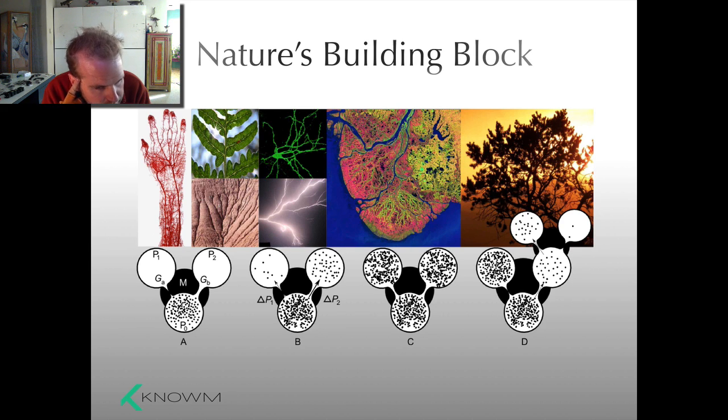So your neurons, built of AHA nodes. Your circulatory system, built of AHA nodes. Your lungs, AHA nodes. Lightning, AHA nodes. Rivers, deltas, AHA nodes. They're everywhere.